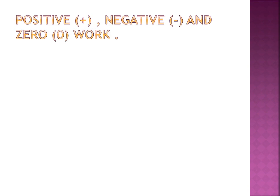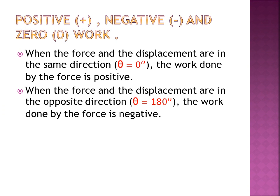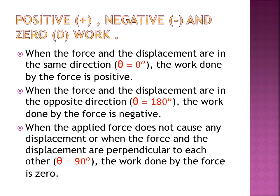The direction of force and displacement decides the type of work done. Work done is divided into three types: positive, negative, and zero. When force and displacement are in the same direction, theta equals 0°, the work done is positive. When they are in opposite directions, theta equals 180°, the work done is negative. When the force does not cause any displacement or force and displacement are perpendicular, theta equals 90°, the work done is zero.